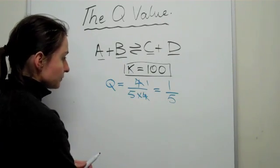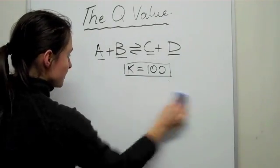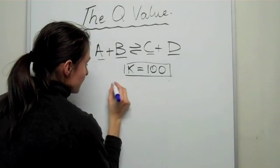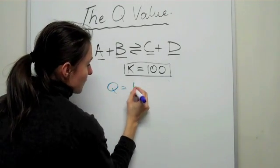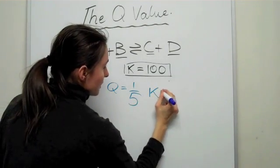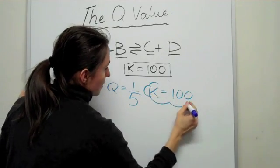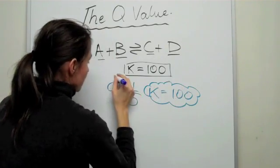Now, okay, so we know that Q is 1 over 5. So let's just compare them two. Let's put them neatly beside each other. Let's write Q is equal to 1 over 5 and K is equal to 100.